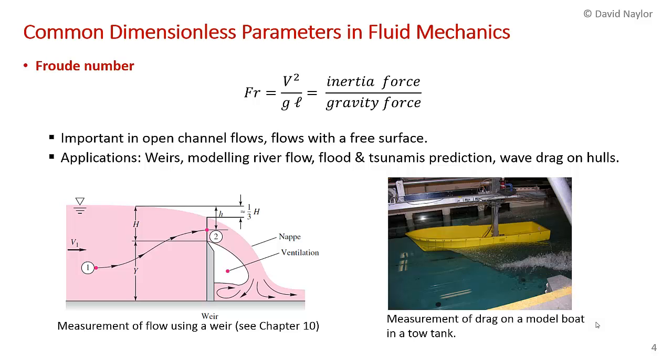There's another number that's quite important called the Froude number. The Froude number is important in open channel flows or flows where you have a free surface. The Froude number is the velocity of the fluid squared divided by gravity times distance. You can show that this is equal to the inertia force divided by the gravity force.